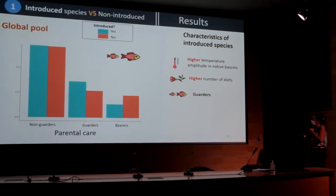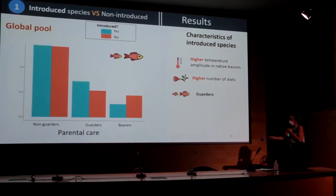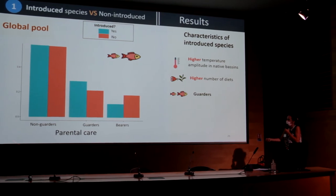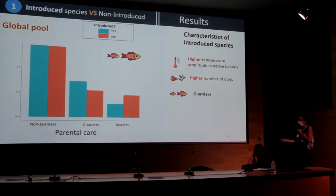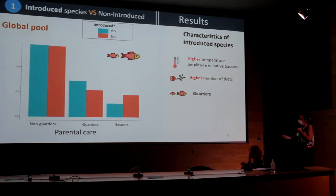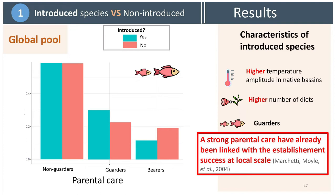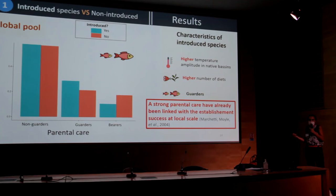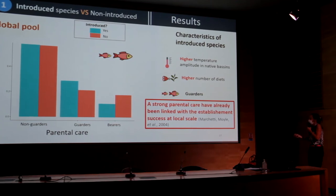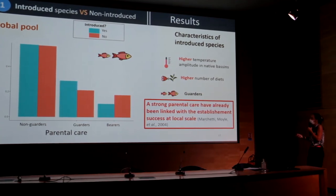Concerning parental care — where the non-bearer category corresponds to the lowest level and the bearer category to the highest — introduced species are more represented in the bearer categories than non-introduced ones. Strong parental care has already been linked in the literature with establishment success, but only at the local scale. Here we demonstrate its influence at the global scale and for the introduction step.